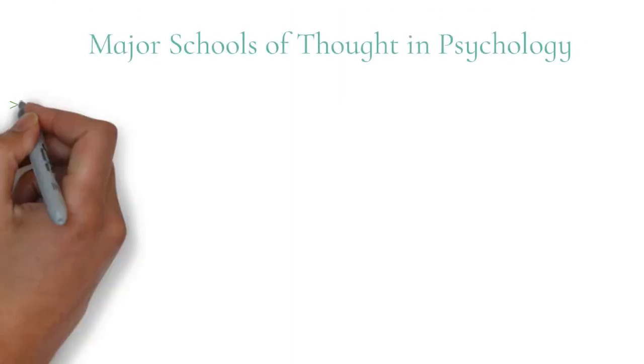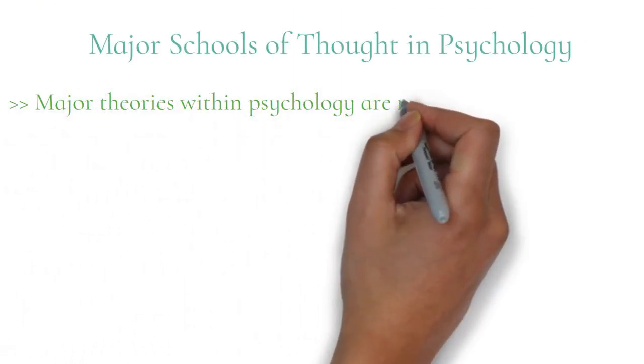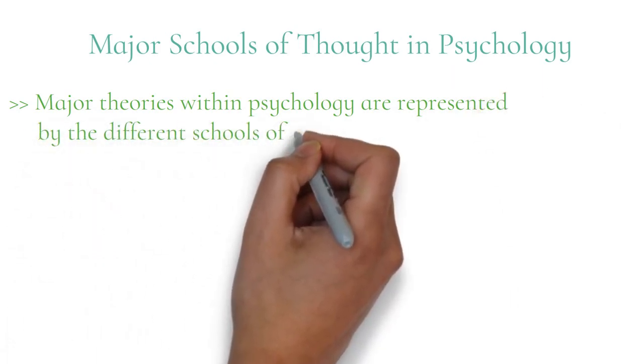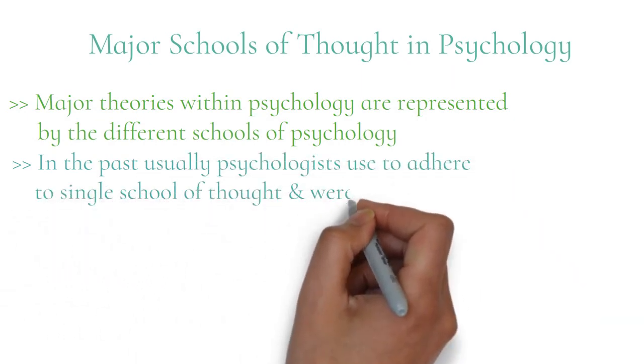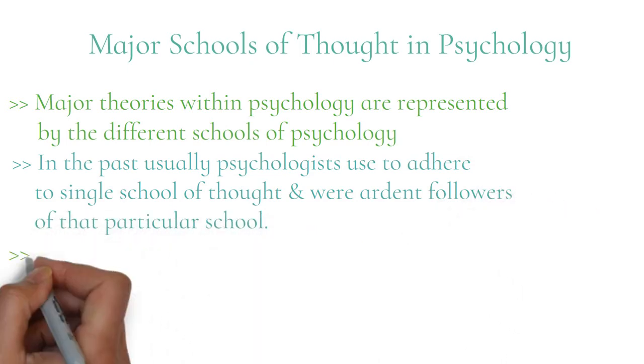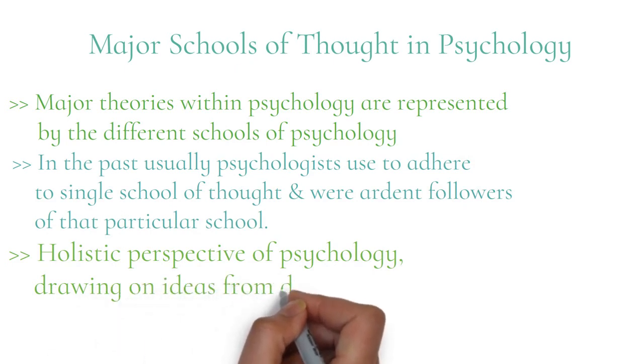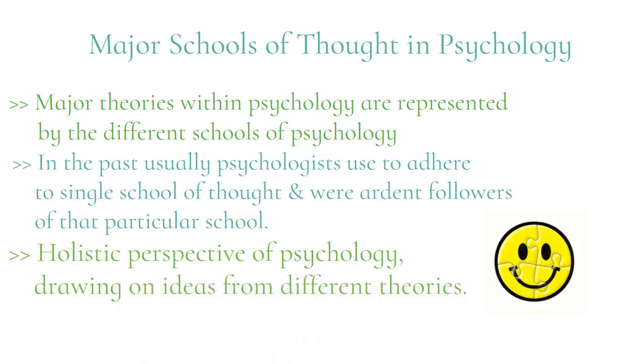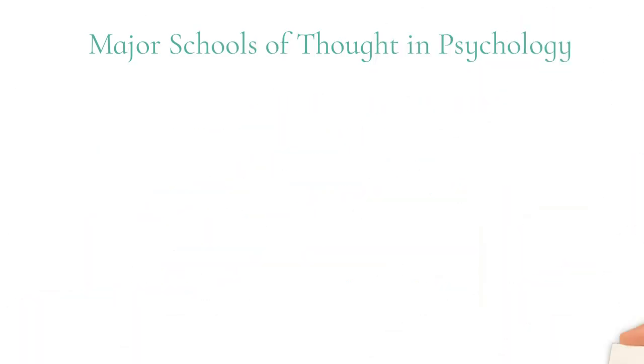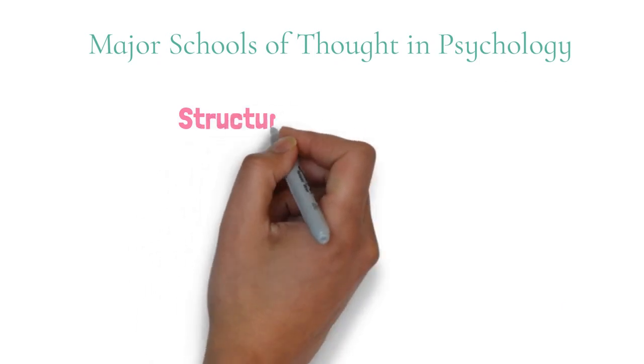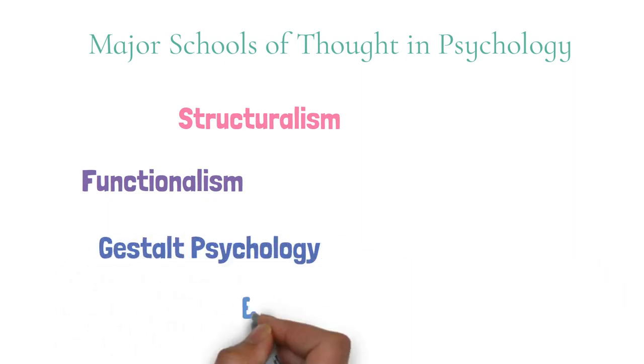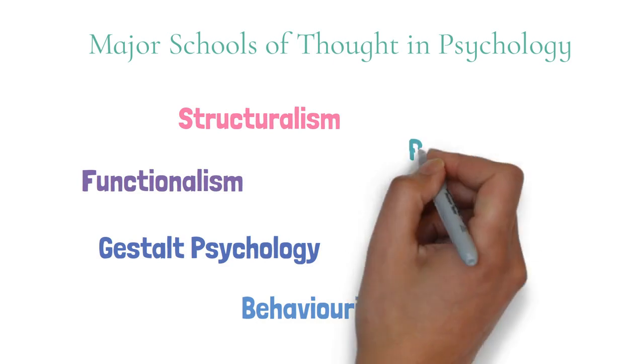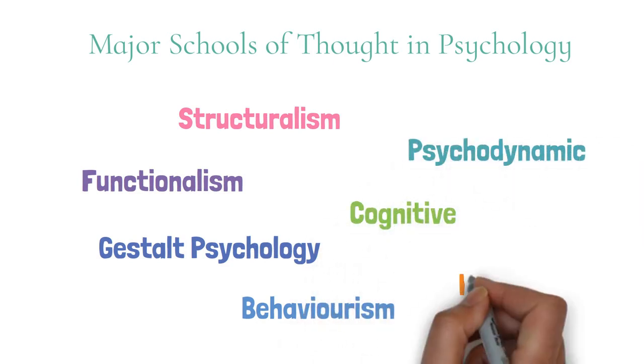Major theories within psychology are represented by the different schools of psychology. Before, the psychologists used to adhere to single school of thought and were ardent followers of that particular school. Now psychologists have a holistic perspective of psychology and draw on ideas from different theories. Some of the schools of thoughts in psychology are: structuralism, functionalism, gestalt psychology, behaviorism, psychodynamic, cognitive, humanistic. Let's learn about structuralism first.